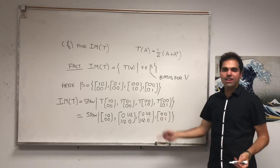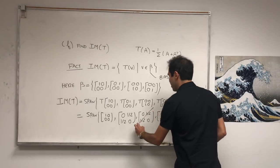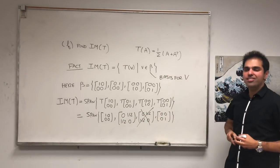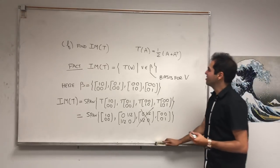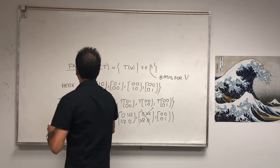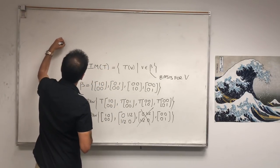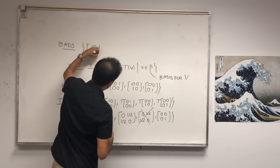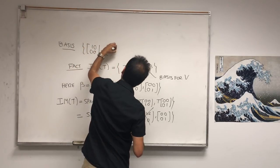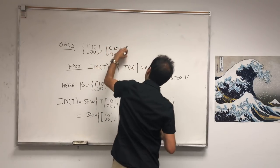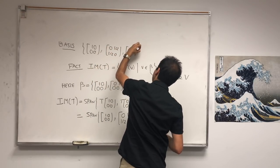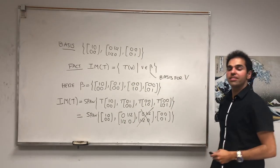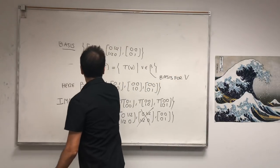Notice one of those vectors is redundant — T of [0,1;0,0] and T of [0,0;1,0] are the same. So if you want to find a basis, you just remove that redundant vector. The remaining vectors are linearly independent, so a basis for the image is: [1,0;0,0], [0, 1/2; 1/2, 0], and [0,0;0,1]. In particular, the rank is 3, just as we predicted, and no pivots were used.